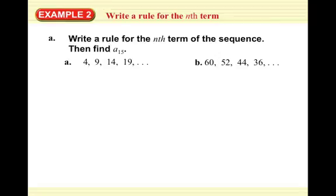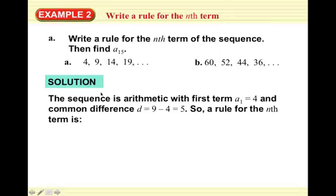We have two sequences to look at for plenty of practice. For part A, we have 4, 9, 14, 19. You can do A2 minus A1 and get 5, or just observe that 4 plus 5 is 9, 9 plus 5 is 14, 14 plus 5 is 19, so D equals 5. The first term A1 is 4.